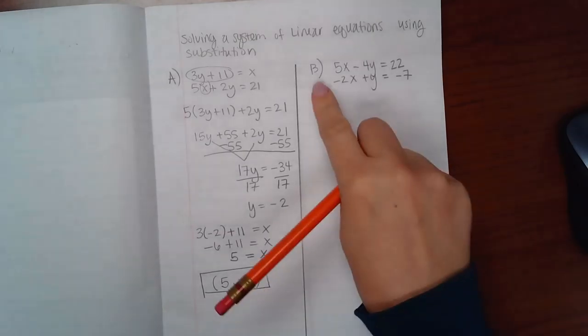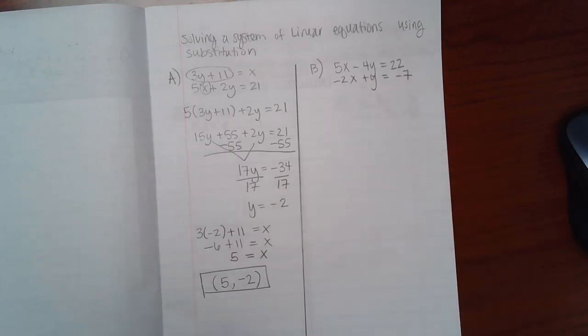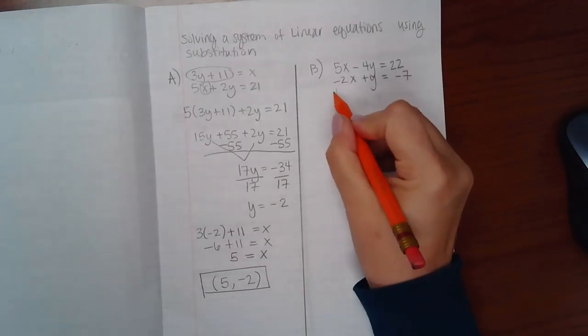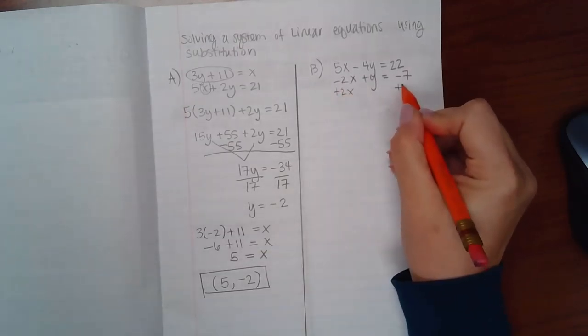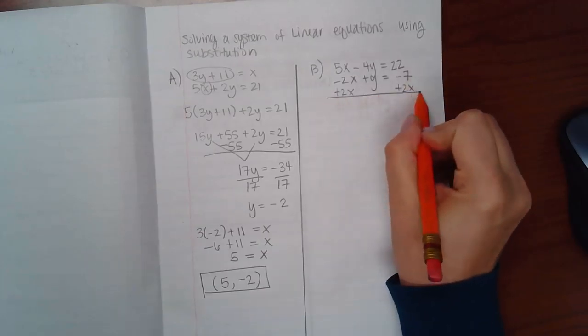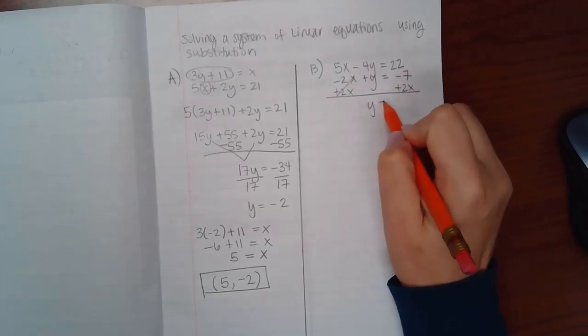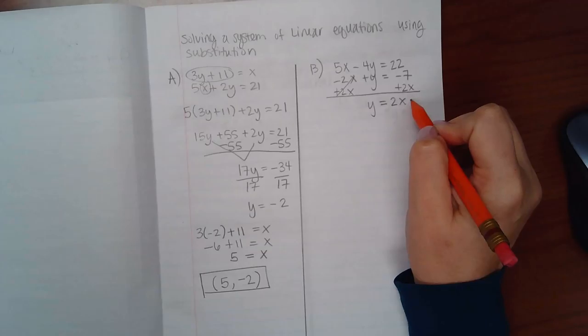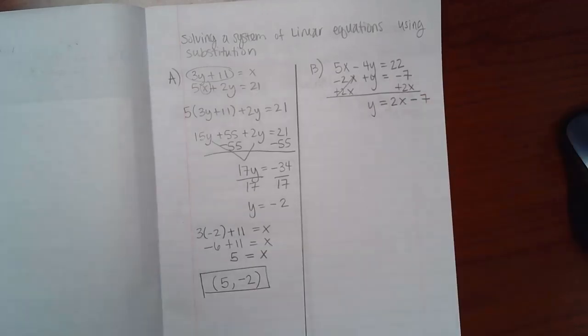So I'm going to take the bottom equation and isolate the y. Which means I will need to move over the 2x by adding 2x to both sides. When I do that, I get y equals positive 2x minus 7.